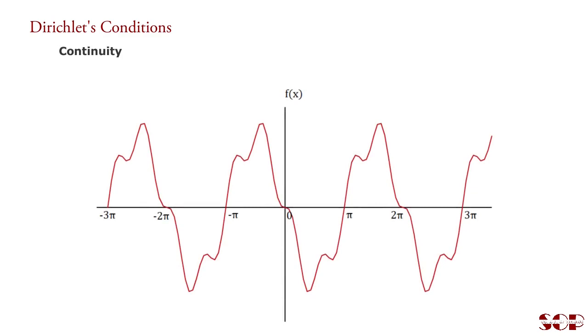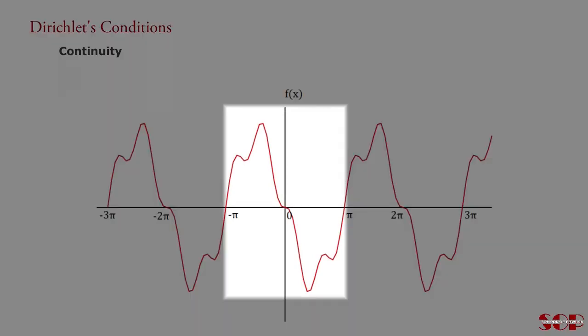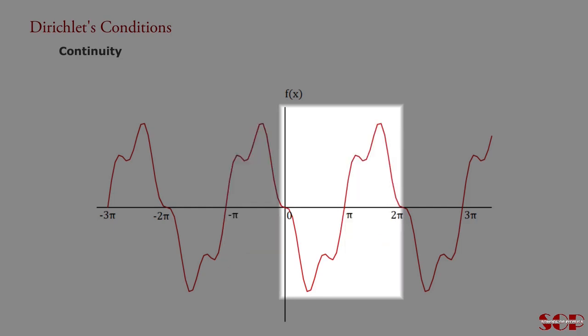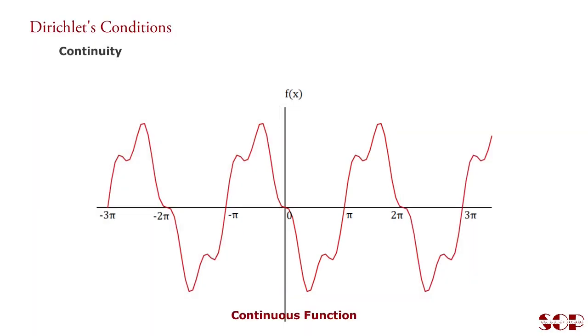I would like to explain certain words which are useful to understand Dirichlet's conditions. Continuity. Suppose a function is given. Consider a period -π to π. It is observed that the function is continuous within these intervals. There is no break. Or consider period 0 to 2π. Here also the function is continuous without any break or jump. So it is called a continuous function.